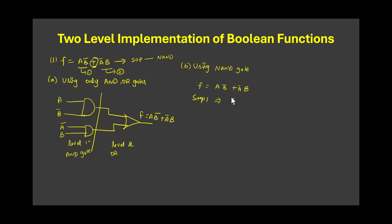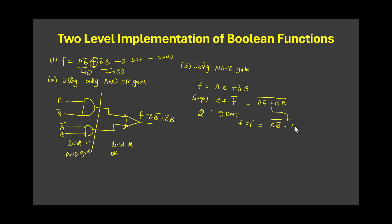Step 1: I complement the logical expression, writing F̄ = (AB̄ + ĀB)̄. Step 2: I apply De Morgan's theorem to this expression. Since there is a sum inside, applying De Morgan's converts it into a product of complemented terms: (AB̄)̄ · (ĀB)̄.